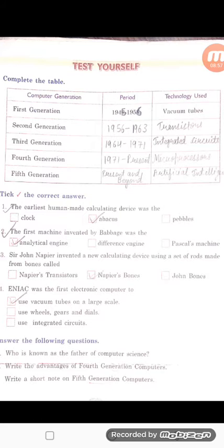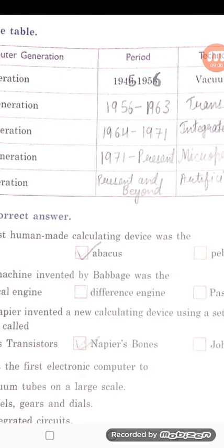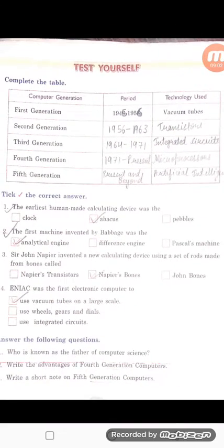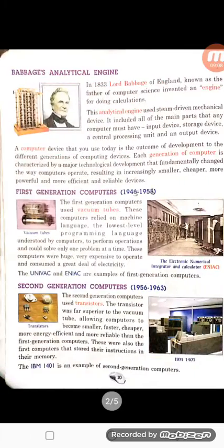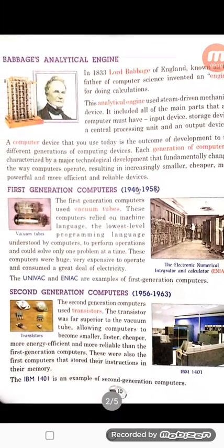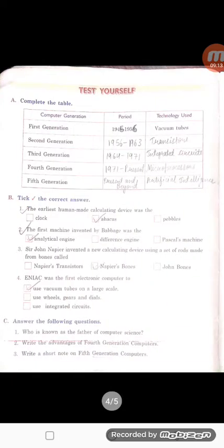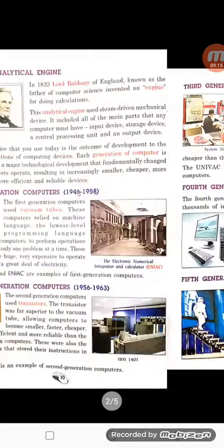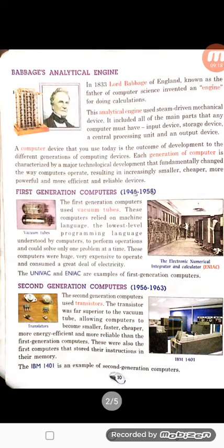In the first generation, you have to write 1945 to 1956, and the technology used was vacuum tubes. In the second generation, the time period was 1956 to 1963.